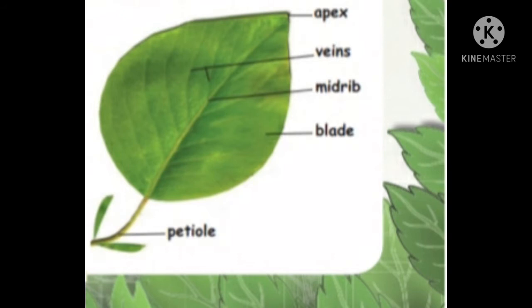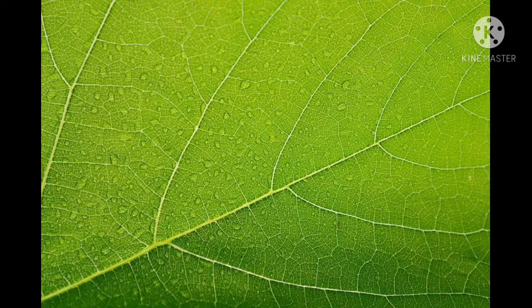Fourth one: veins. Veins are branched out from the midrib. They are the framework of hollow tubes that carry water and minerals.